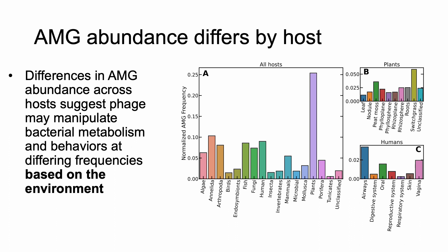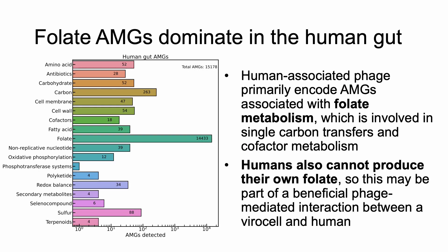Although there do not appear to be many AMGs in the human gut in particular, this is still an extremely relevant environment for human health, so I want to zoom in further into the specific functional categories for this sub-environment. On the left is a chart enumerating the number of AMGs detected in the human gut for a given category of metabolism. Note that the x-axis is on a log scale. Notably, folate metabolism is the dominant AMG pathway encoded by phage in the human gut.